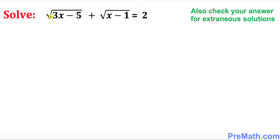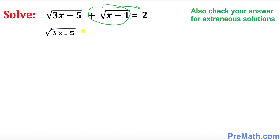The very first thing we want to do is isolate one of the radicals. To do that, move the radical on the right-hand side so we're left with only one radical on the left-hand side equal to 2, and this positive radical becomes negative square root of x minus 1.